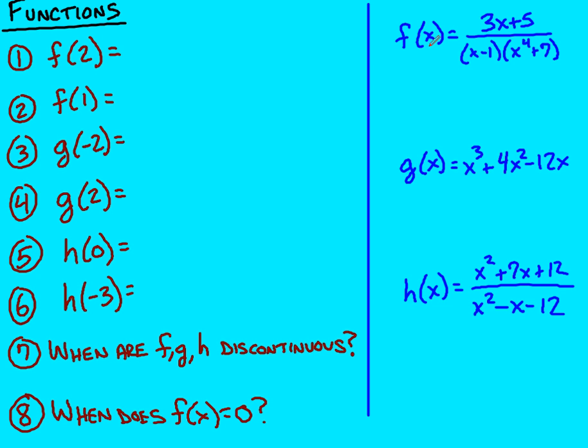So for f of two, I'm just going to plug in two here. So I now have three times two plus five on top. I have two minus one and I have two to the fourth plus seven. So this top will become six plus five which is eleven.